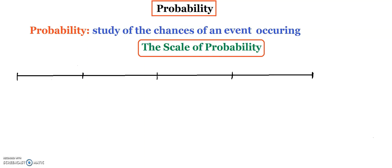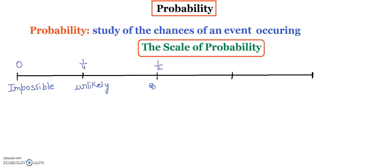On this number line, the scale of probability, we're going to start from 0, which is impossible. Then we have 1 over 4, which is unlikely. Then we have 1 over 2, which is equally likely. Then we have 3 over 4, which is likely. And then we have 1, which is certain.